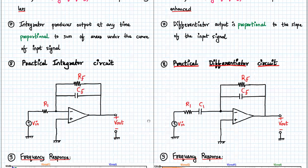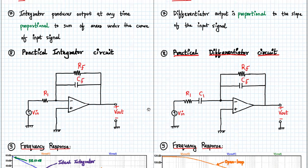In a practical integrator circuit we have components RF, CF, and R1. In the case of a practical differentiator, we have RF, CF, R1, and C1.